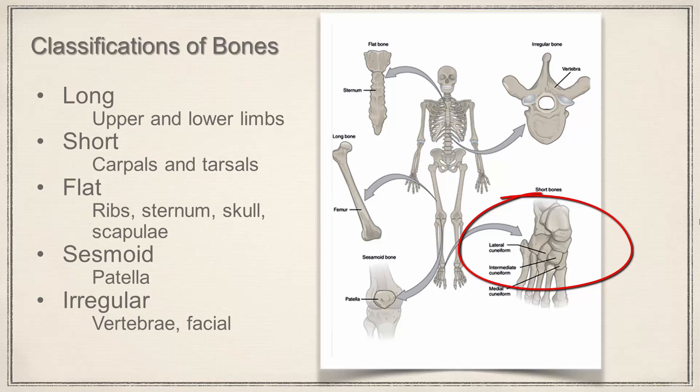Then we have flat bones. Examples of those would be like the ribs - the ribs are flat, the sternum or breastbone is flat, some of the bones of the skull especially those along the side of the skull are going to be flat bones, and the scapula or shoulder blade is a flat bone.